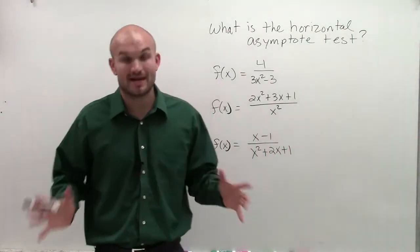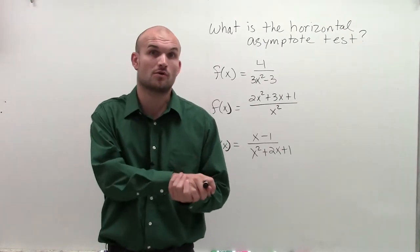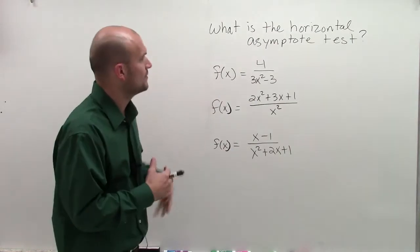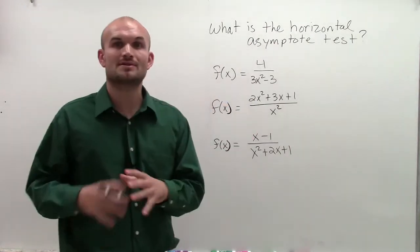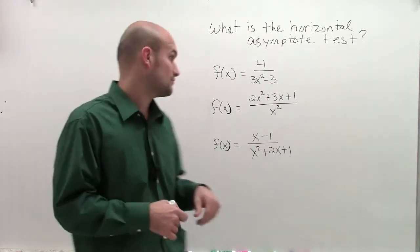So remember, when we're talking about vertical asymptotes, we take a look at them on a graph, how to determine a vertical and a horizontal asymptote. And when we talked about vertical asymptotes, that was always going to be the values of x that made your denominator equal 0.